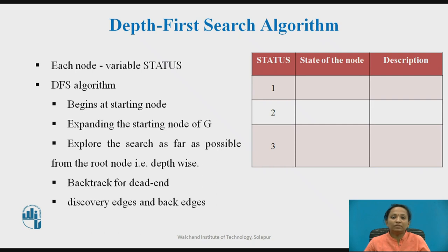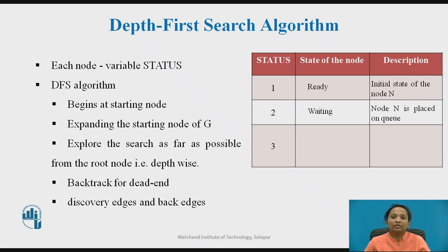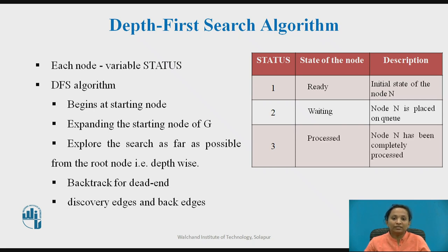In these algorithms, every node in the graph has a variable status set to 1, 2, or 3 to indicate its current status. The value 1 indicates ready status — the initial state of node N. The value 2 indicates waiting status — node N is placed in the stack and waiting to be processed. The value 3 indicates processed status — node N has been completely processed.